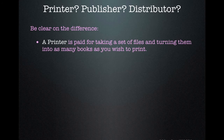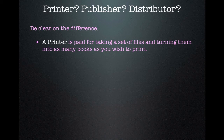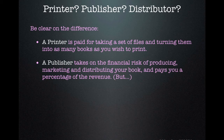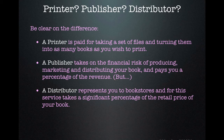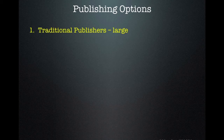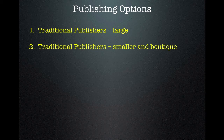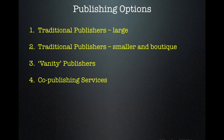Let's get clear on language. A printer is paid for taking a set of files and turning them into as many books as you wish to print. A publisher takes on the financial risk of producing, marketing, and distributing your book and pays you a percentage of the revenue — though these days they expect you to do most of the marketing and publicity yourself. A distributor represents you to a bookstore and takes a significant percentage of the retail price. Publishing options include traditional publishers — large and small — vanity publishers, co-publishing services, and self-publishing.